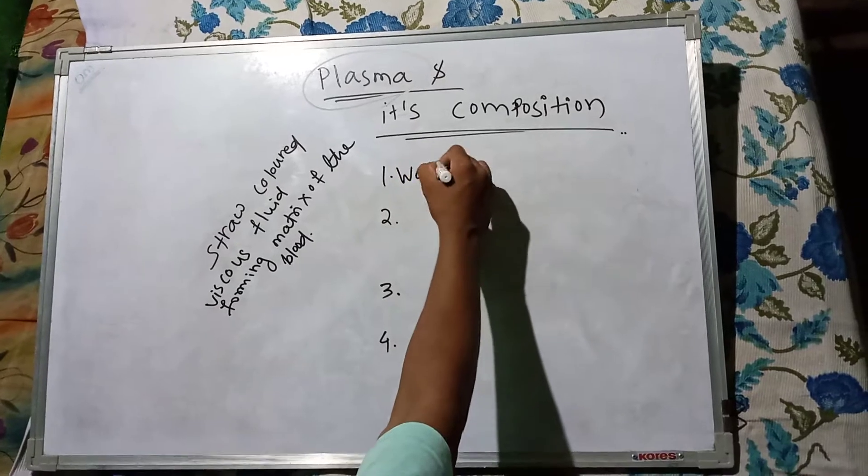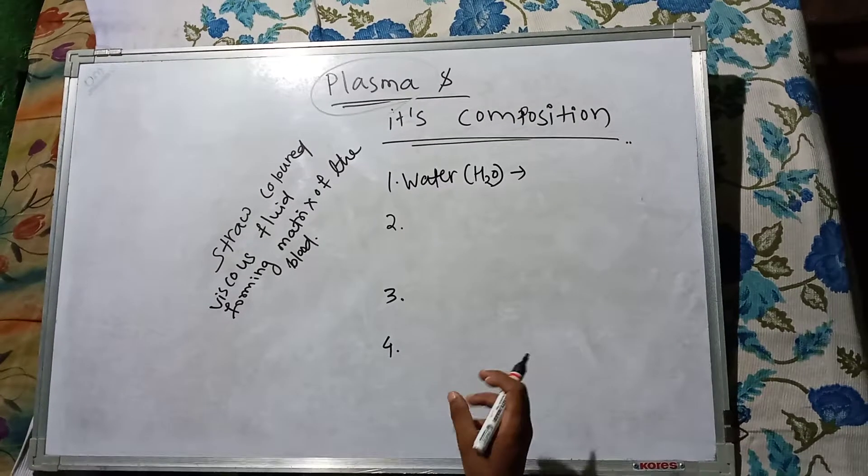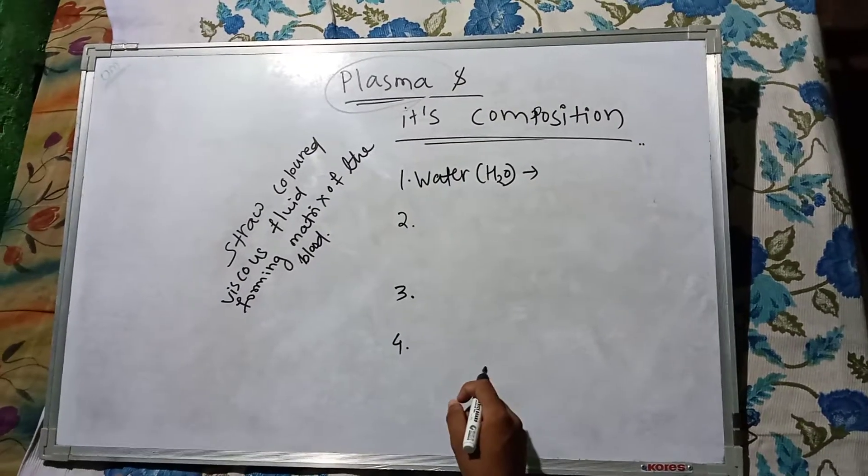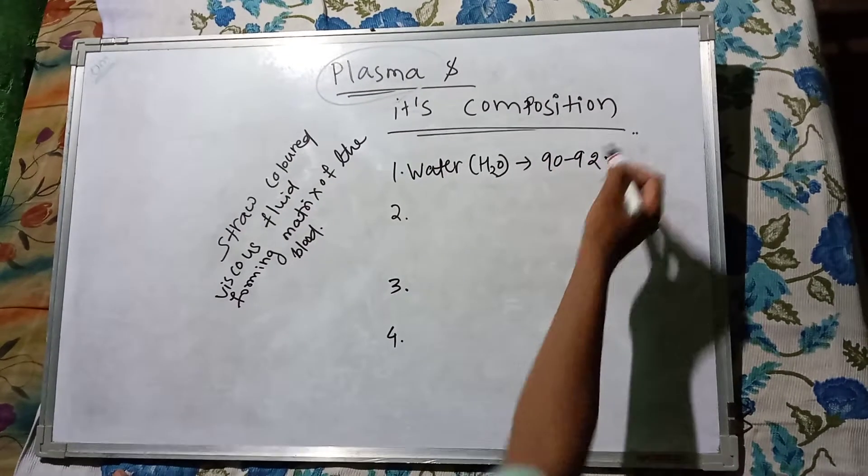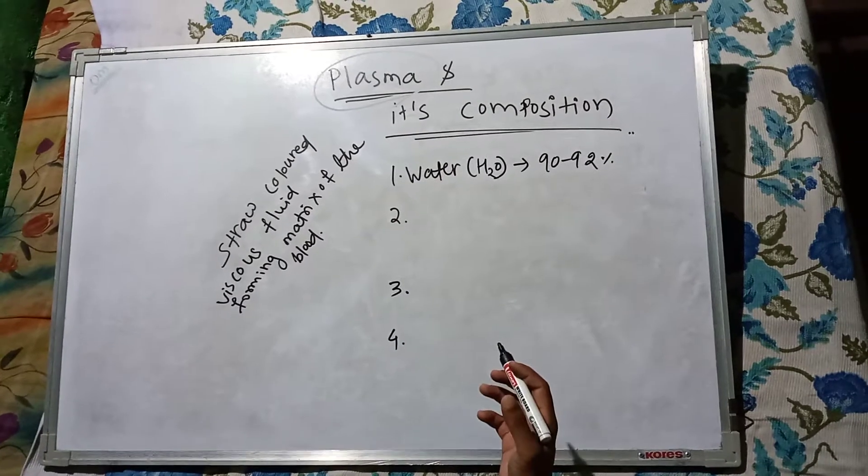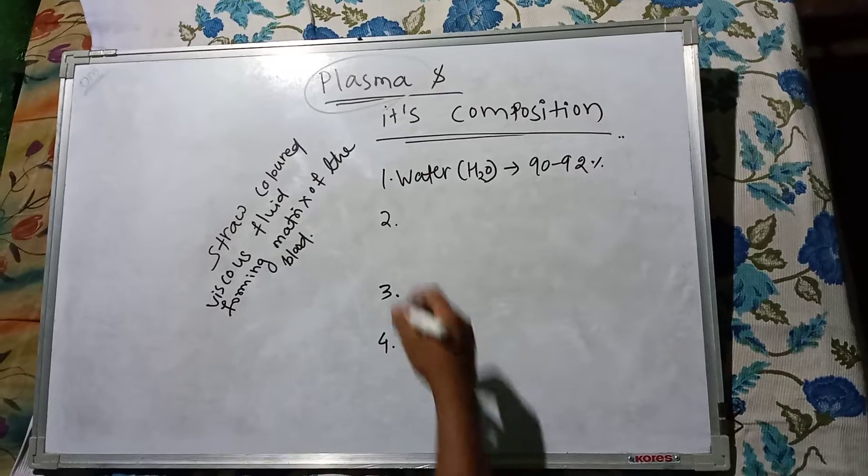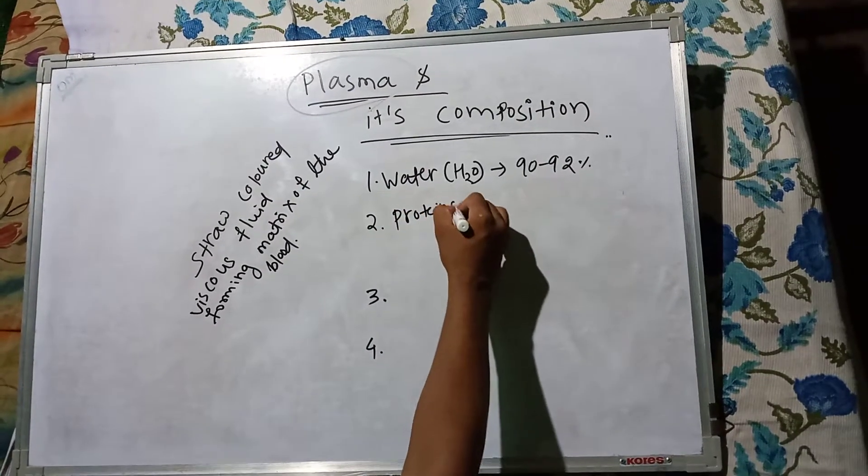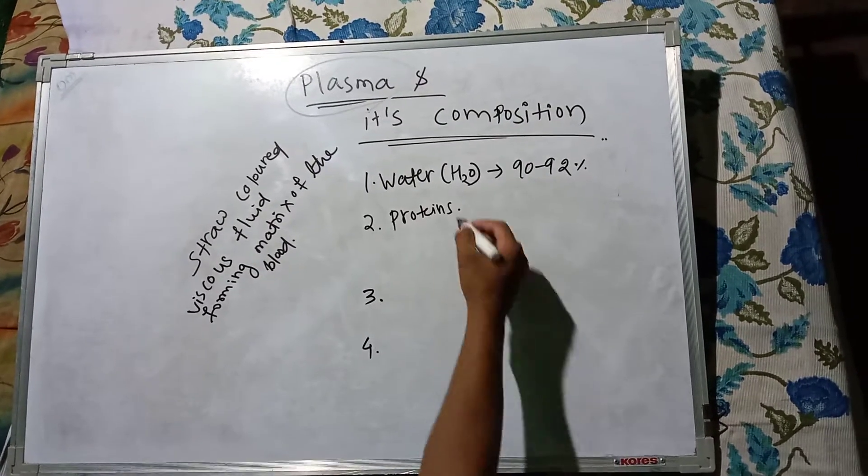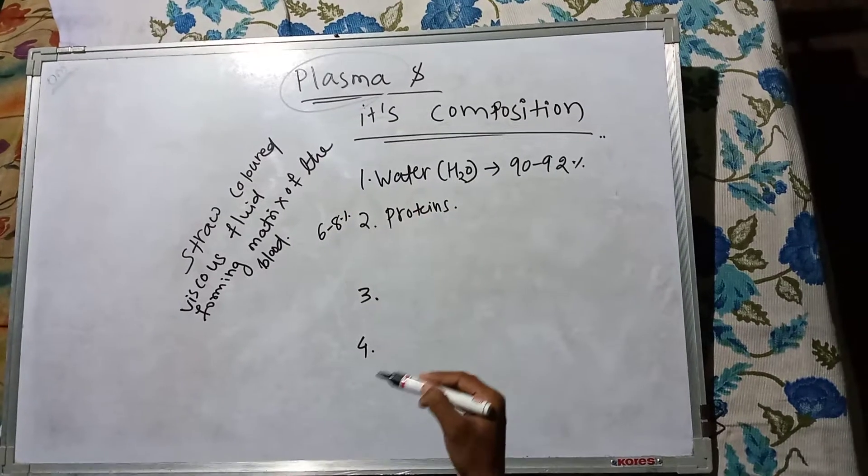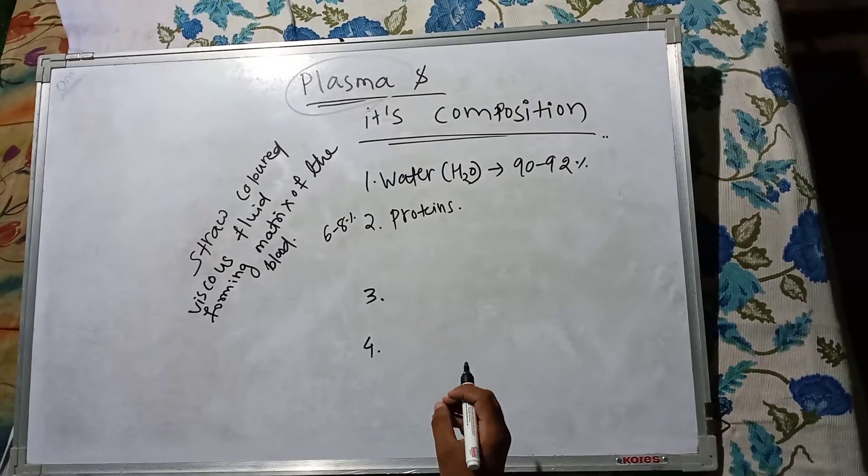H2O is the main composition of plasma. Ninety-two percent of plasma is water. Proteins constitute about six to eight percent of it, and basically three major types of plasma proteins are found.